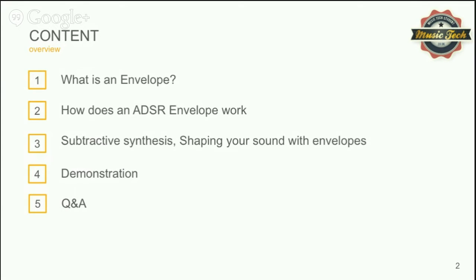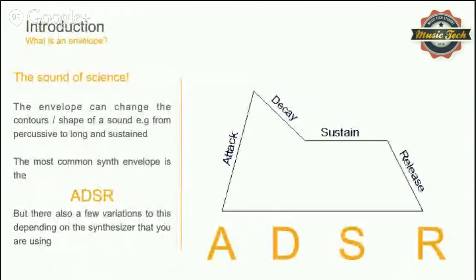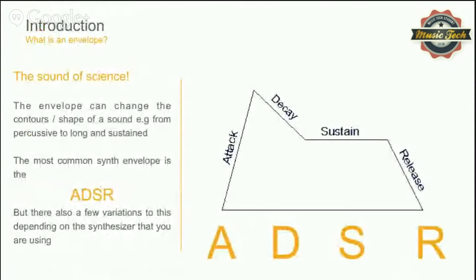It should be fairly basic, but we'll look at some complex stuff as well, keeping it as simple as possible so everyone can follow along. Introduction to the envelope — this is the sound of science, where shapes are mathematical and it goes into physics and other areas. The envelope can change the contours and shape of your sound, for example from making percussive sounds to long sustained sounds. The most common envelope is the ADSR, though ADSR envelopes can also be shaped in different ways to replicate other kinds of envelopes.